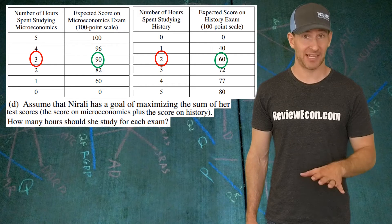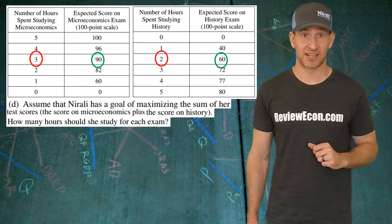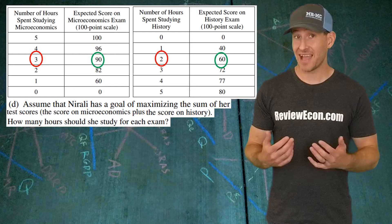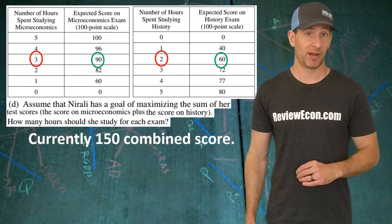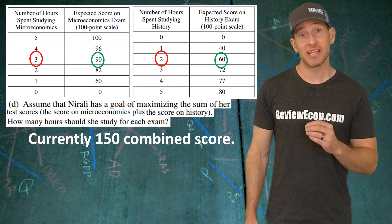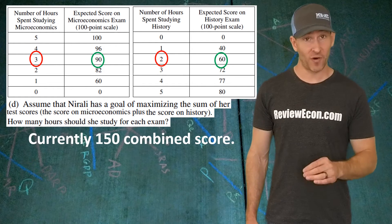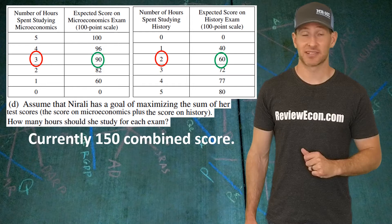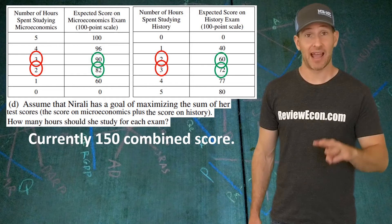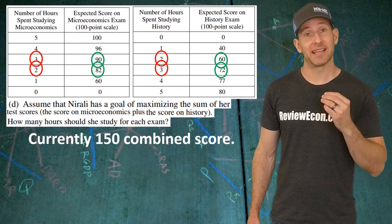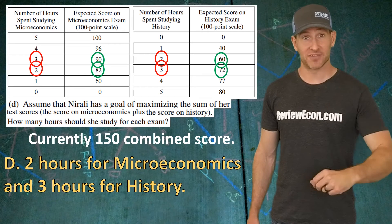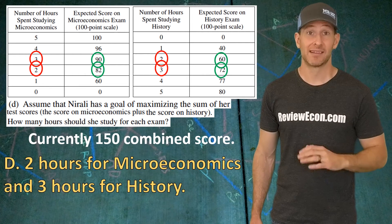For part D, we're looking at the best place for Nirali to allocate her five hours of studying economics and history. Currently she's studying three hours of economics and two hours of history, giving her a combined score of 150 points. But if she adjusts her allocation, she can get a combined score of 154 points by moving to two hours of economics and three hours of history. So all you have to do here is say three hours of history and two hours of economics, and you'll get your point.